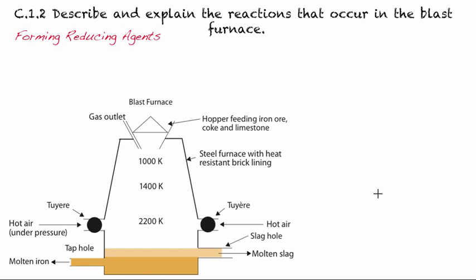What you can see here is a simple diagram of a blast furnace. You can see the temperature gradient getting hotter as you go down. Ultimately, our goal is to get some molten iron that we can extract and use to create steel and other iron-related materials.